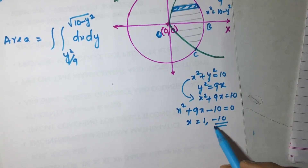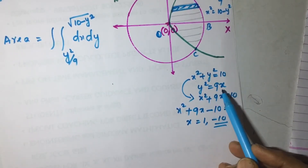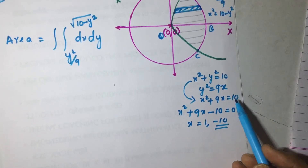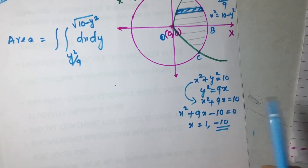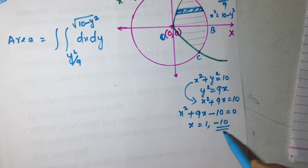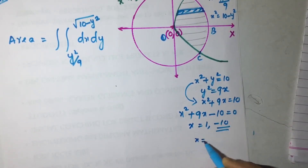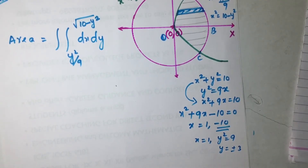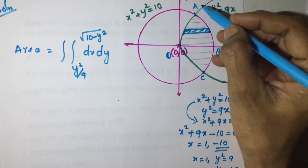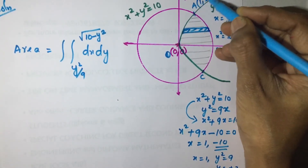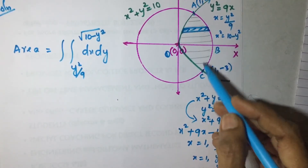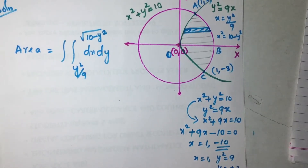We reject x = −10 because it would give y² = −90, making y = √(−90), which is complex — not a real number. So we take x = 1. When x = 1, y² = 9, giving y = ±3. The upper intersection point is (1, 3) and the lower is (1, −3).